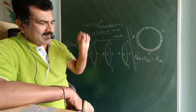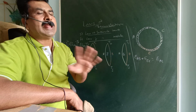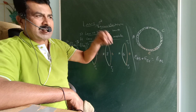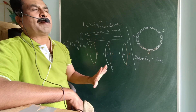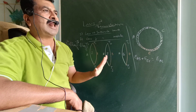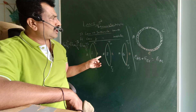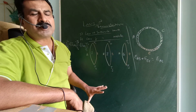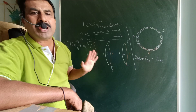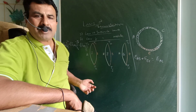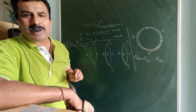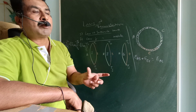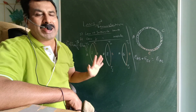Even when an extra metal is inserted into the thermocouple, there is no change in the thermo EMF. For example, in a copper-iron thermocouple, when a galvanometer is connected inside the thermocouple, there is no variation in the thermo EMF.